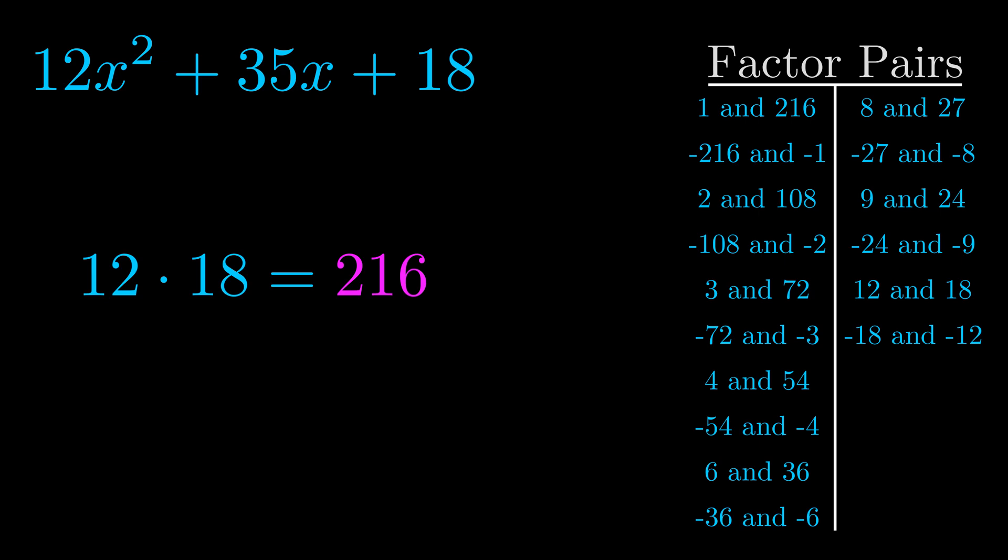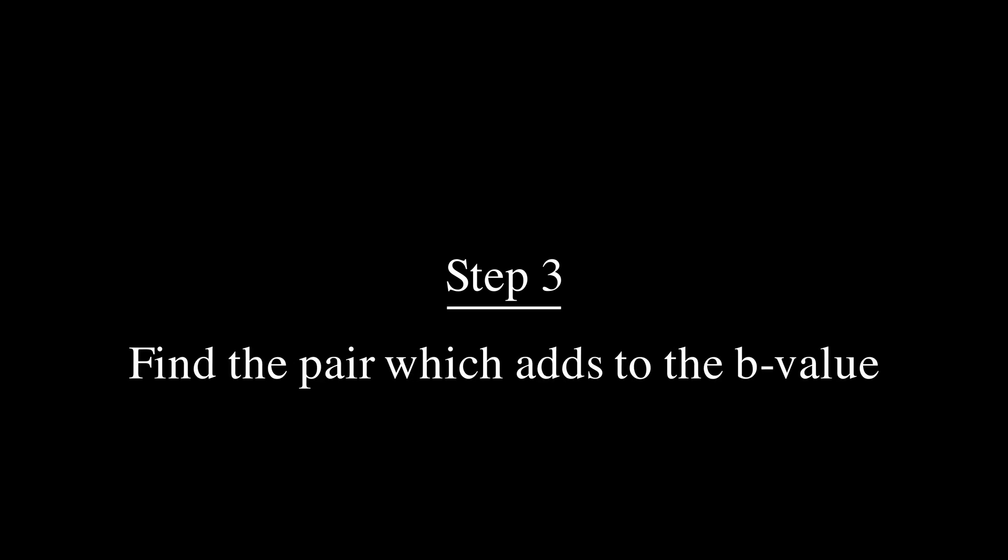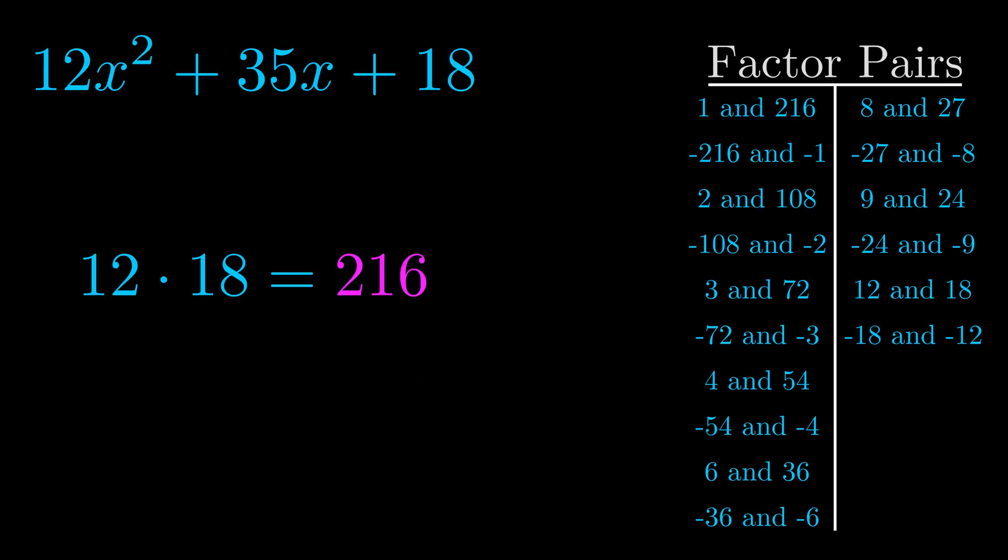Now once you have these factor pairs the goal is to find which of these pairs adds to the b value. The b value is the coefficient on the x term. That's the middle term, the one that we haven't done anything with yet. And really this is the only factor pair that we need.